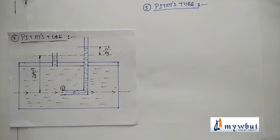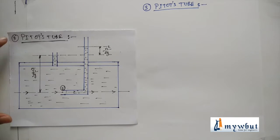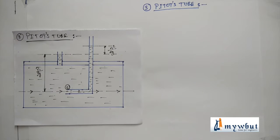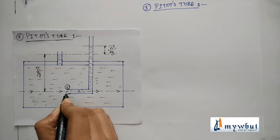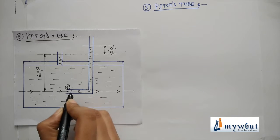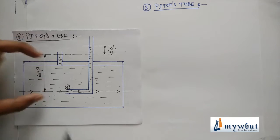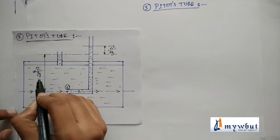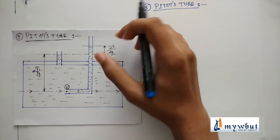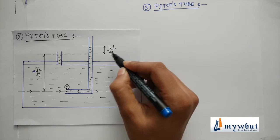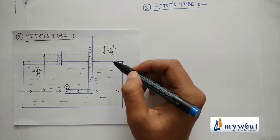So now let us see the third and the last application of Bernoulli's theorem, that is pitot's tube. This apparatus is known as pitot's static tube apparatus. This is mainly used to measure the velocity. So here the velocity of the fluid is assumed to be zero, the fluid velocity here becomes zero.